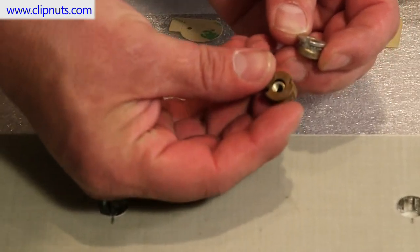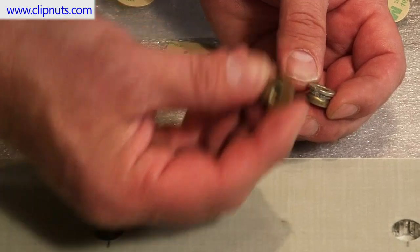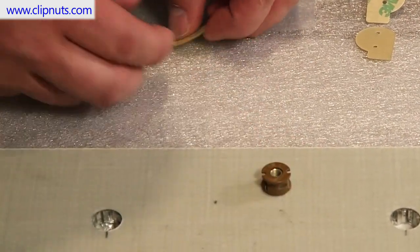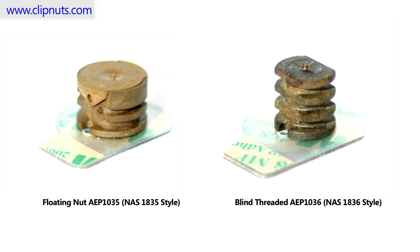Our next demonstration is the installation of a blind threaded insert. A blind insert provides threads which do not pass through the panel. Marketing Masters manufactures two styles of blind threaded inserts: the AEP 1035 blind floating nut and the AEP 1036 blind threaded types.